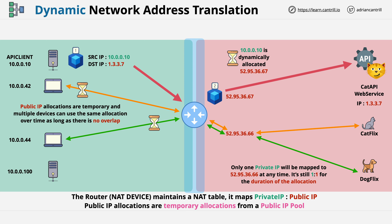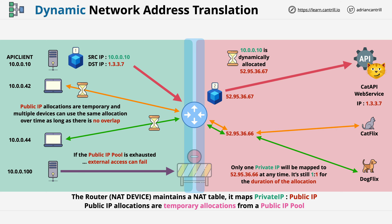With dynamic NAT, because the shared public pool of IP addresses is used, it is possible to run out of public IP addresses to allocate. If the bottom server attempts to access the public internet when there are no IPs available in the pool to allocate, then this access will fail.